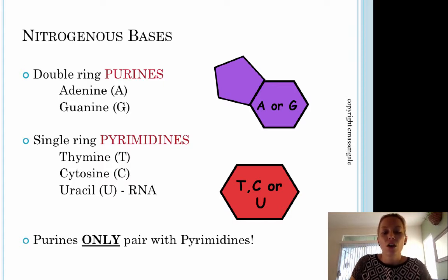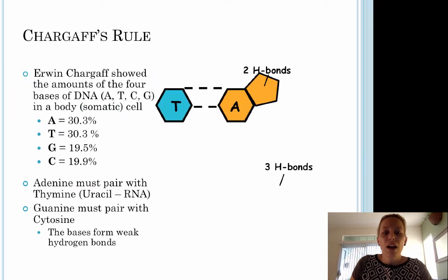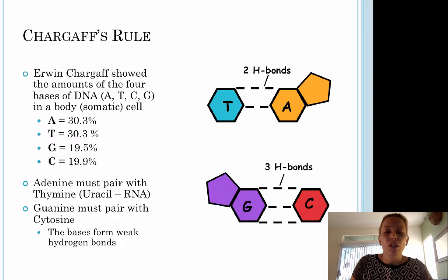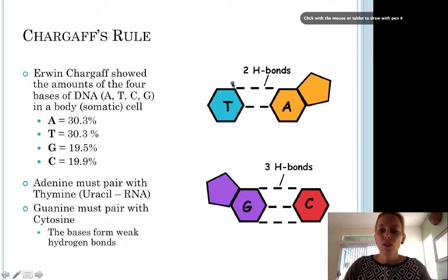This bonding rule is referred to as Chargaff's rules. Erwin Chargaff did research about the bases and looked at the amount of adenine, thiamine, cytosine, and guanine in a body cell. He found there was equal amounts of adenine as there was thiamine and equal amounts of guanine as there was cytosine. He concluded that adenine must pair with thiamine and guanine must pair with cytosine. So we have those purines pairing with pyrimidines.